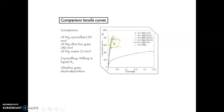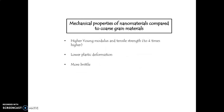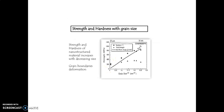The tensile curve value will be changing depending upon the grain size. Mechanical properties of nanomaterials compared to coarse grain material show higher modulus and tensile strength — up to four times can be achieved for nanomaterials. Then, lower plastic deformation and more brittle material. Strength and hardness of the nanostructured material increases with decreasing size — that is a very important point. The previous slides also explained the same thing.